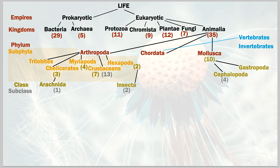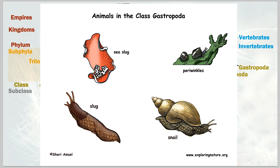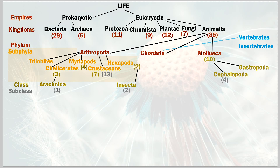Cephalopods have a subclass of four. The second mollusk class I'll present is gastropods — the snails, slugs, and sea slugs. Gastropods previously had four subclasses, but that changed and they're no longer recognized as such. This is an important point: these classifications change every few years as the scientific community updates them.